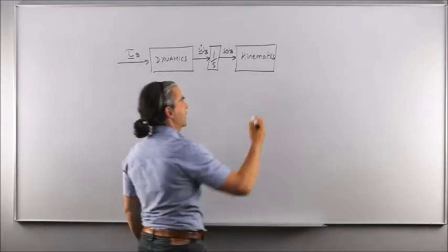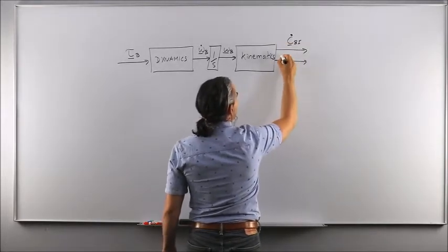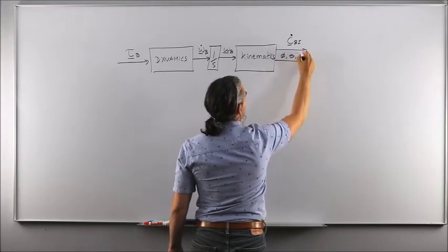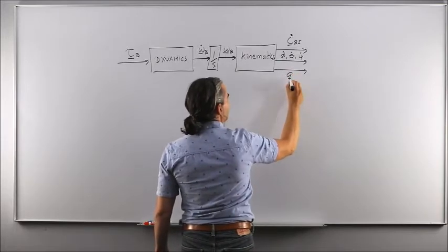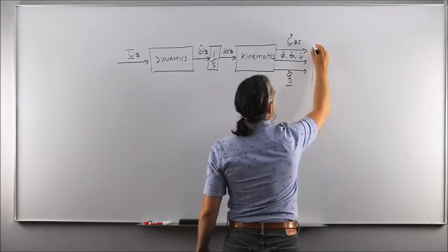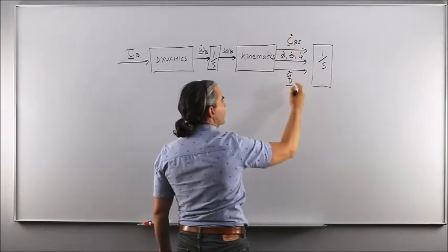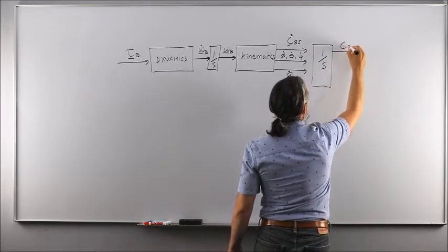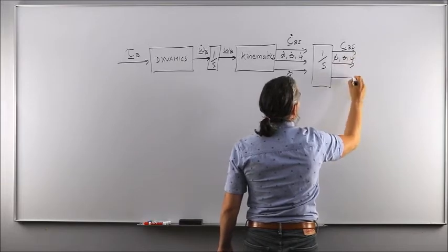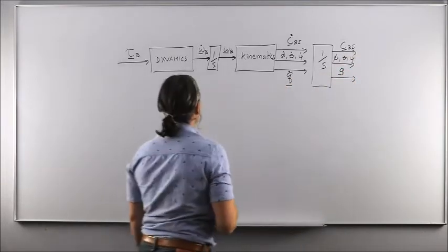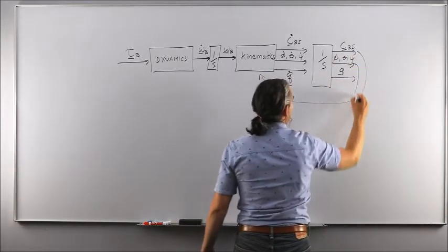Based on the angular velocity, the differential kinematics relationships allow us to calculate the rate of change of our attitude matrix, or the rate of change of our roll-pitch-yaw angles, or — if using the quaternion attitude representation — we get q_dot. Then we integrate those kinematics differential equations to obtain either our attitude matrix C_BI, our Euler angles roll-pitch-yaw, or the quaternion q. The actual attitude is then fed back to the kinematics equations.